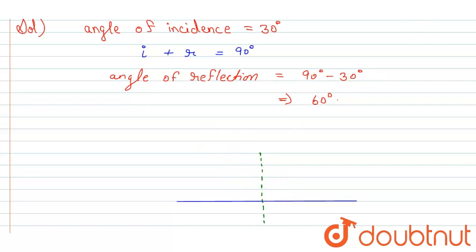And the incident ray with angle 30 degrees will be like this, and the reflected ray will be like this.